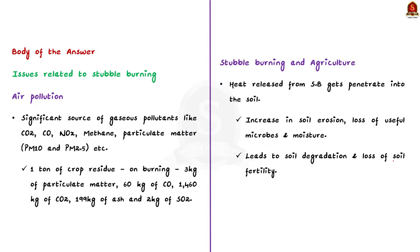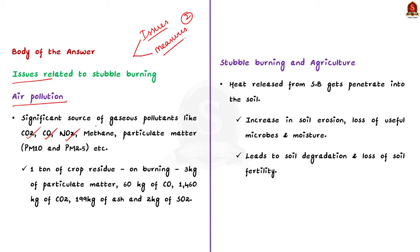Coming to the body part, it can be divided into two sections. Firstly, we are going to discuss the issues related to stubble burning, and secondly, the measures taken by government to prevent stubble burning. The first issue is air pollution. Stubble burning is a significant source of gaseous pollutants such as carbon dioxide, carbon monoxide, nitrogen oxides, methane, and particulate matter. These pollutants cause serious damage to human health, the environment, and agricultural practices.